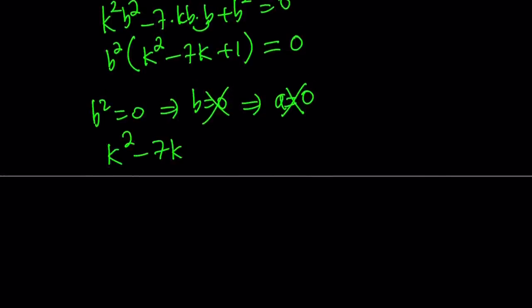So this is a quadratic equation, fairly easy to solve. And remember, k equals a/b, and that's what we're looking for. So we're looking for the k values. And by using the quadratic formula, -b ± √(b² - 4ac), which is 49 minus 4, which is 45, and that is divided by 2.